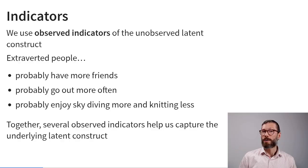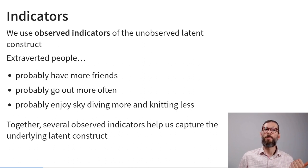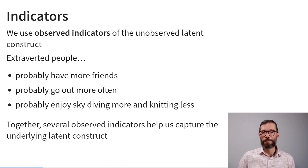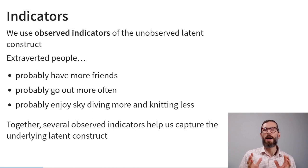To measure a personality trait like extroversion, we use observable indicators of the unobservable latent construct. For example, extroverted people probably have more friends, tend to go out more often, and enjoy skydiving more than knitting. Together, all of these observed indicators help us capture the underlying latent construct of extroversion.